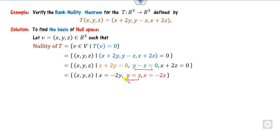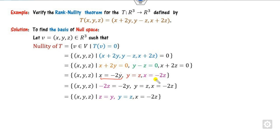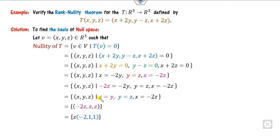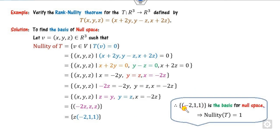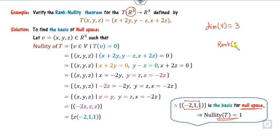We substitute x = -2z, y = z, z = z, and factor out z. So the null space spans a single vector (-2, 1, 1). There is only one basis element, so the nullity is 1. Since V is R³, its dimension is 3. With nullity equal to 1, our target is to prove that the rank of the transformation must be 2 — if so, the Rank Nullity Theorem is verified.